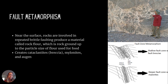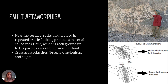Fault metamorphism usually happens near the surface. Rocks involved in repeated brittle faulting get broken up and ground between the two moving rock bodies. This can create interesting rocks like a fault breccia or a mylonite. A mylonite has a very linear appearance, while a fault breccia shows material that got ground up along the fault.